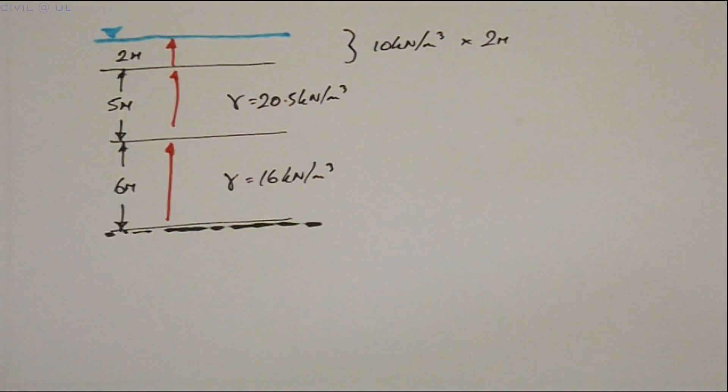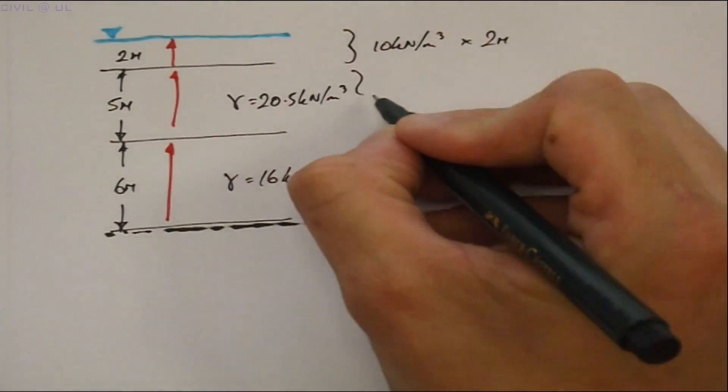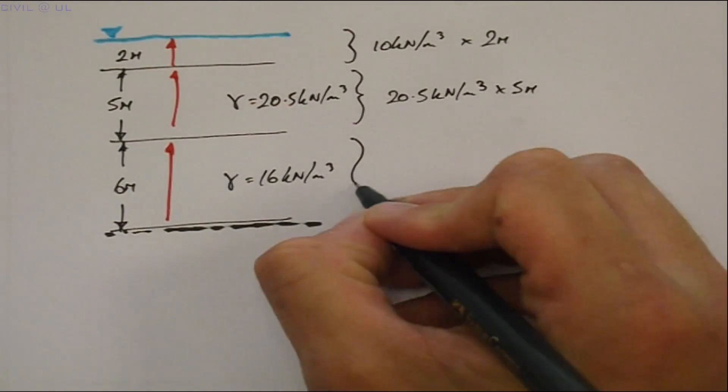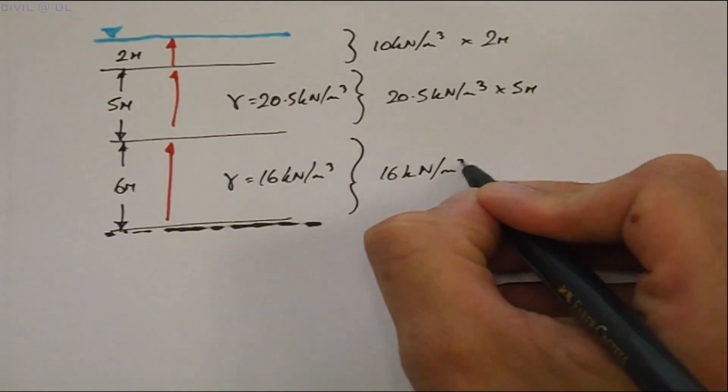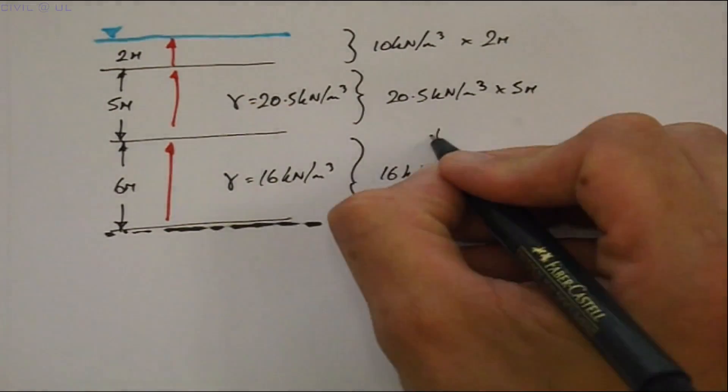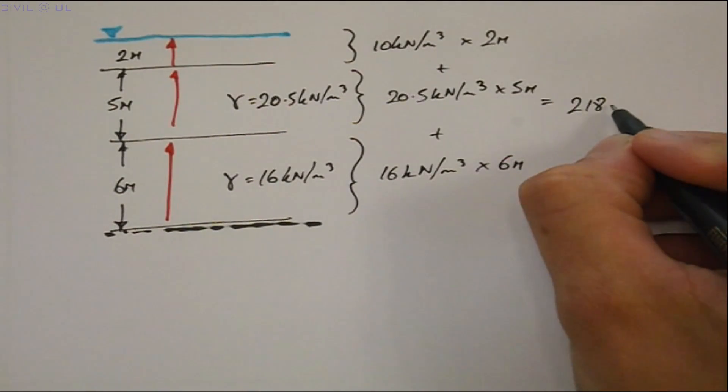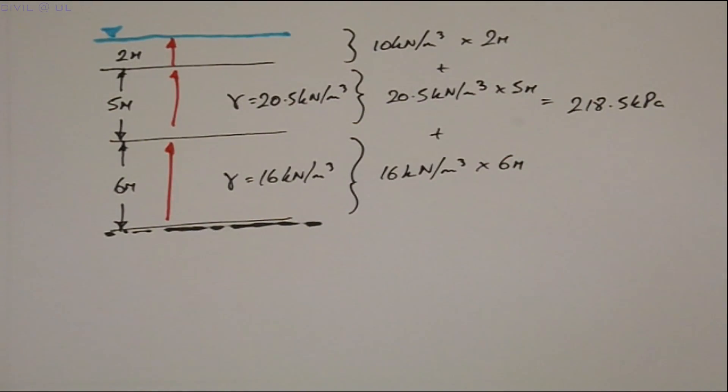Plus what we had before. Strata one 20.5 multiplied by 5 plus strata two 16 multiplied by 6. This gives a total stress equal to 218.5 kPa.